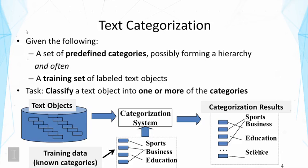The problem of text categorization is defined as follows. We're given a set of predefined categories, possibly forming a hierarchy. Often also a set of training examples — labeled text objects that have already been labeled with known categories. The task is to classify any text object into one or more of these predefined categories. The categorization system processes many text objects and assigns categories to them as shown.